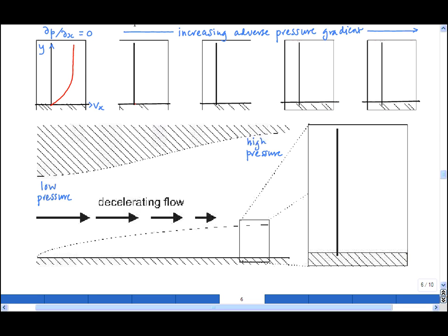With a slight adverse pressure gradient, we will start off with an almost parabolic velocity profile in the opposite direction to the case with a favorable pressure gradient. And then we'll end up at the free stream velocity. Note that at this point we have an inflection point.